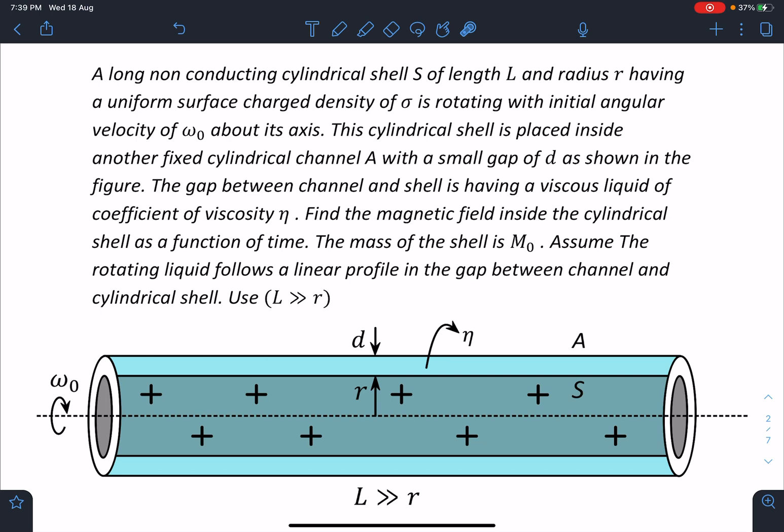Find the magnetic field inside the cylindrical shell as a function of time. The mass of the shell is M₀. Assume that the rotating liquid follows a linear profile in the gap between the channel and cylindrical shell. Use L >> r and also we are assuming this thin gap d is very very small compared to the radius r.